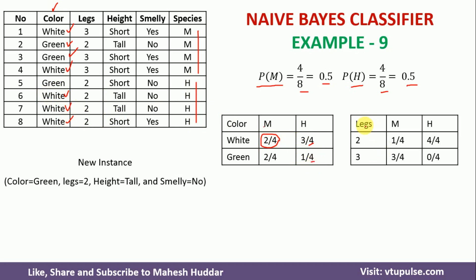Similarly, for the legs attribute: within the M examples, legs=2 appears 1 time, so P(legs=2 | M) = 1/4, and legs=3 appears 3 times, so P(legs=3 | M) = 3/4. In the H examples, legs=2 appears 4 times, so P(legs=2 | H) = 4/4, and legs=3 does not appear, giving P(legs=3 | H) = 0/4.